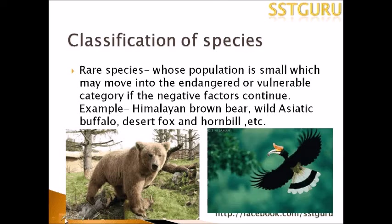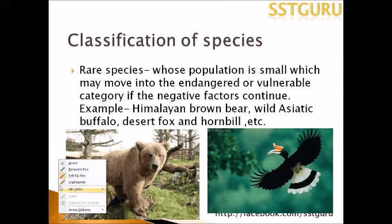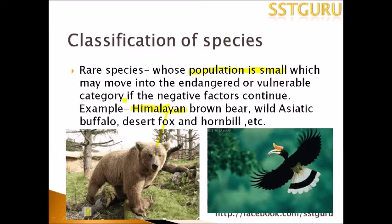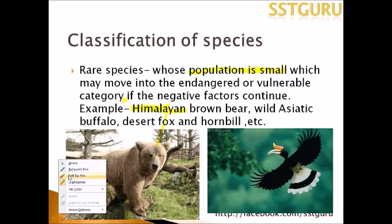Next comes Rare Species. Rare species are those animals whose population is small and which may move into the endangered or vulnerable category if negative or hostile factors continue to operate. Animals classified as rare species include the Himalayan brown bear, the wild Asiatic buffalo, the desert fox, and the hornbill.